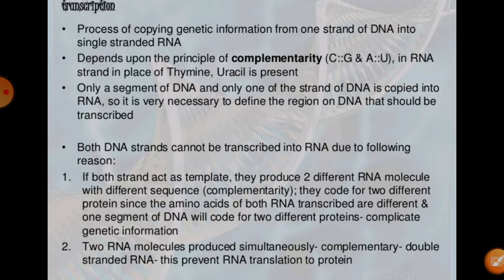Especially during the transcription process, adenosine now forms a new base pair known as uracil, in place of thymine. As you already learned in DNA structure, adenosine is always combined with thymine. But after transcription, the complement of adenosine becomes uracil in place of thymine. This is the main difference.